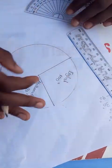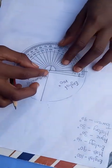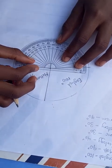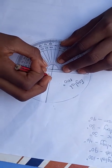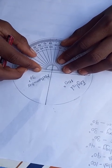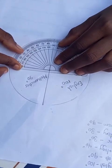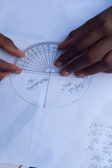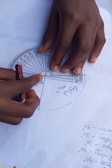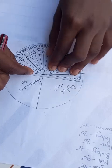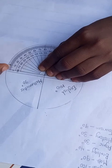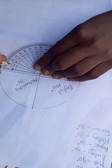Place the protractor like this. This line to the center and this line to the pencil line. Agric is 30 degrees, which is 10, 20, 30. Mark.